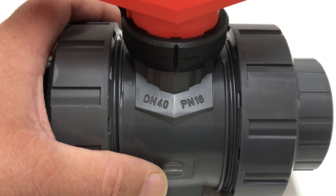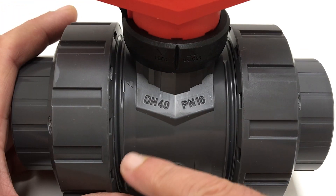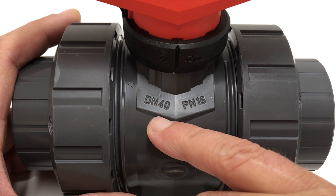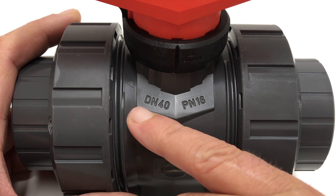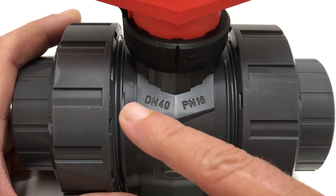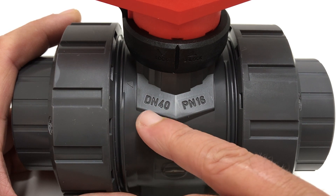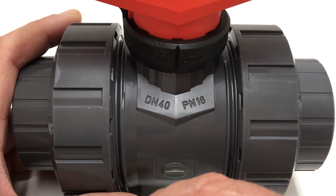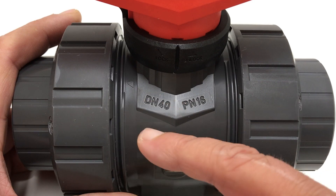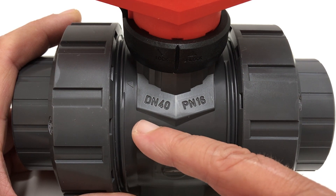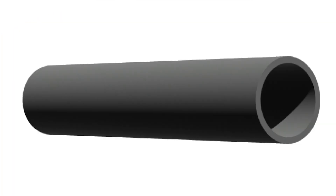Now this is the DN number — we can see that this valve is designated DN 40. This does not simply mean that it is for use with pipe with an outer diameter of 40 millimeters. DN stands for 'diamètre nominal', which is French but translates to English as 'nominal diameter'. But always remember: this is not an accurate reflection of the pipe's outer diameter.